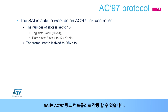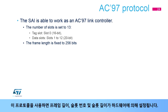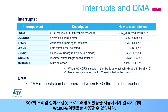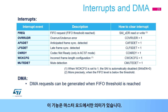The SAI is able to work as an AC-97 link controller. When this protocol is used, the frame length, slot number, and slot length are set by the hardware. Several events can be enabled to generate interrupts. The WCKCFG event can be used to inform the user that the frame length of the SAI has been improperly programmed. This feature only makes sense in master mode.